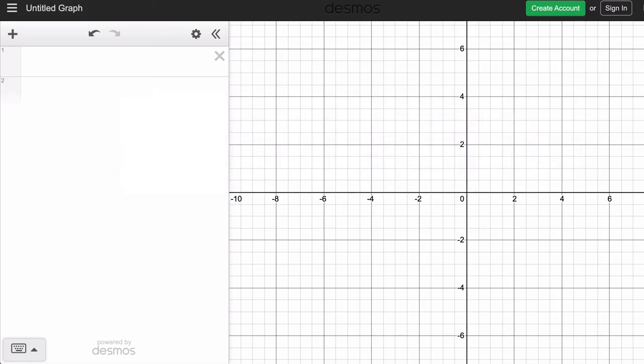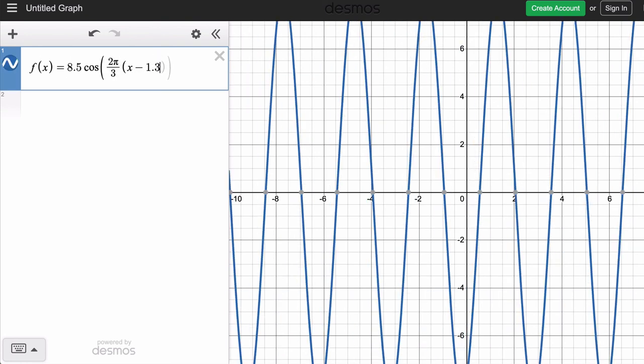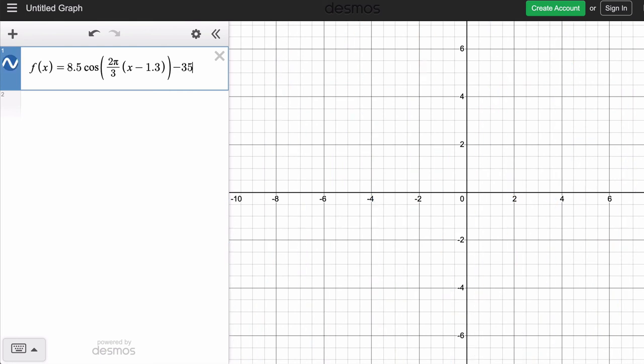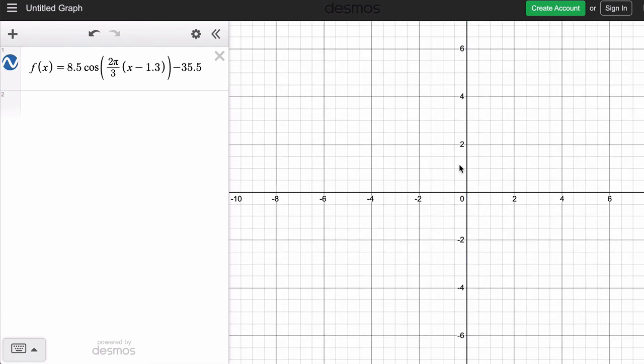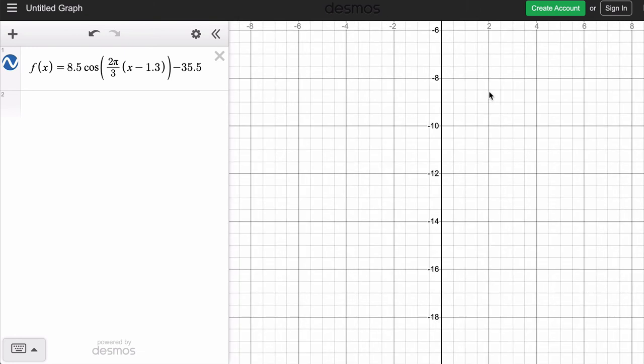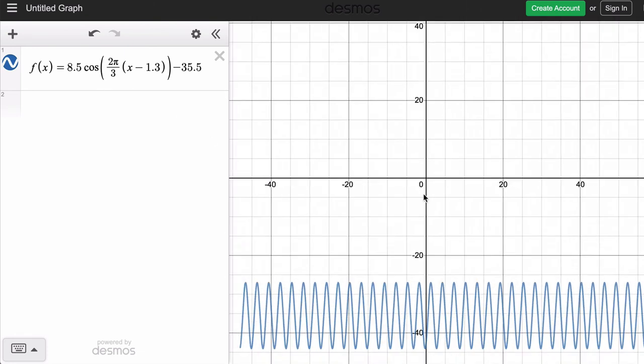And then I would encourage you to check yourself. You're putting a lot of work into these problems. One easy way to do that is on Desmos. So all you have to do is type in f of x equals the function we just typed out. 8.5 times the cosine of 2π divided by 3 parentheses x minus 1.3 close parentheses minus 35.5. Now I can't see it because the function is low. So I'm going to click and drag. There it is.